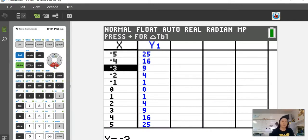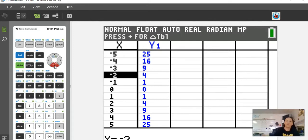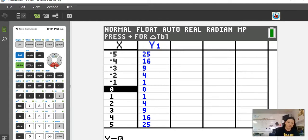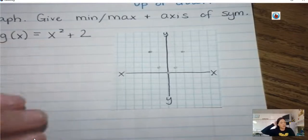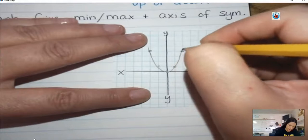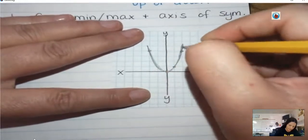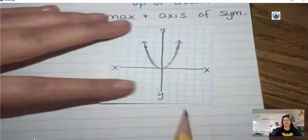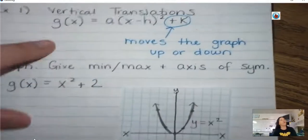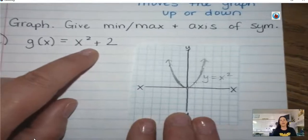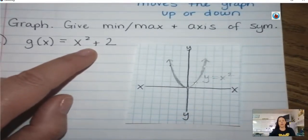For the parent function y equals x squared, plot these points: negative 2, positive 4; negative 1, 1; zero, zero; positive 1, positive 1; and positive 2, positive 4. Connect those with a nice smooth curve. This is the regular graph for quadratics. But now I'm going to be doing transformations — moving this graph. For 1A, it's going to be y equals x squared plus 2, so I'm going to put that into my graphing calculator.